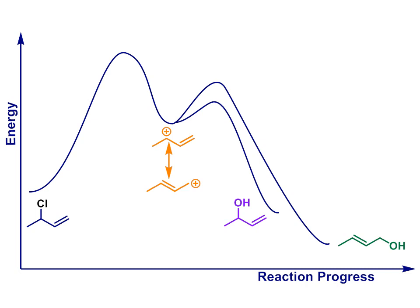Here's a real example of this idea in action. A reaction profile for the SN1 substitution of 3-chloro-1-butene with a hydroxide nucleophile. The starting material first loses chloride to form a carbocation, shown in orange here, and stabilized by resonance.